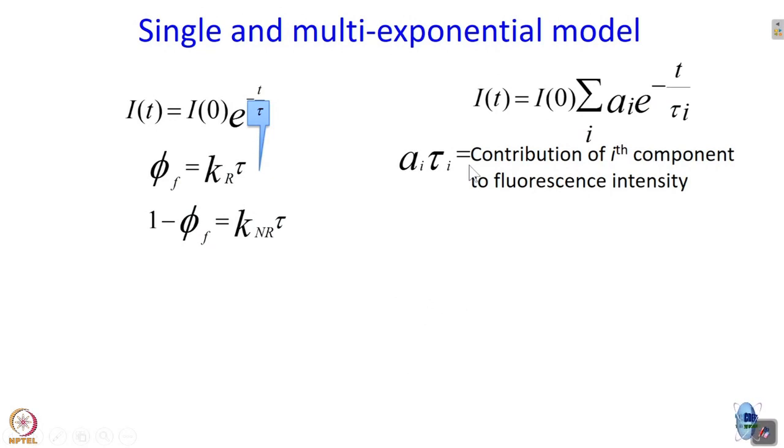Consider two components: tau_1 for a free fluorophore and tau_2 for the same fluorophore bound to cyclodextrin or protein, where tau_2 is longer than tau_1. The intensity depends not only on tau_1 and tau_2 but also on how much is bound and how much is free. Say 20% is bound to cyclodextrin; the free-form lifetime is 1 nanosecond and the bound-form lifetime is 10 nanoseconds. Naturally intensity will be much more when 80% is bound. The contribution of the i-th component to fluorescence intensity is a_i multiplied by tau_i.